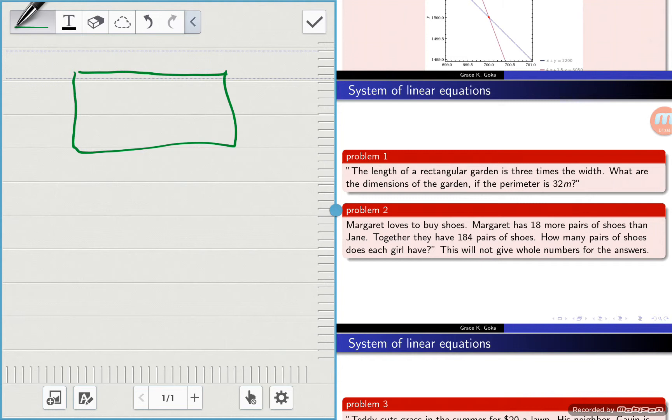We know that the length of the garden is three times the width. So if this is our width, then it means the length is three times the width. So here it would be 3W, which would be the length. And since it's a rectangular garden, it means the lengths are the same. So if we have 3W here, it means we also have 3W here, and we also have a W here.